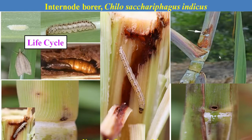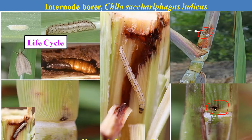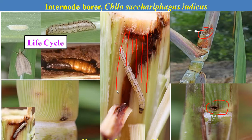The next one is the internode borer. The name indicates that this caterpillar attacks the nodal region of the sugarcane by making small circular holes. When the caterpillar enters the main stem, the hole is plugged with its own excreta, and it feeds on the inner content of the stem. Due to continuous feeding, the inner tissue becomes reddened and the cane becomes hard, giving the characteristic symptom of reddening and hardening of the canes due to internode borer infestation.